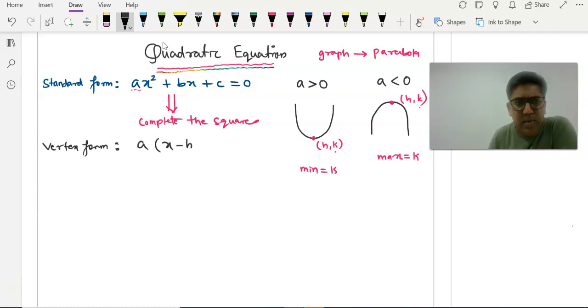The vertex form is a(x - h)² + k = 0. We call it vertex form because from this form, you can get the vertex of the parabola.